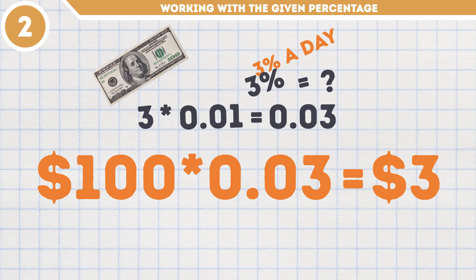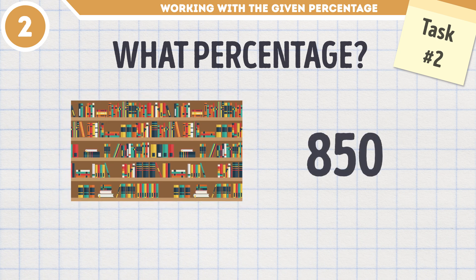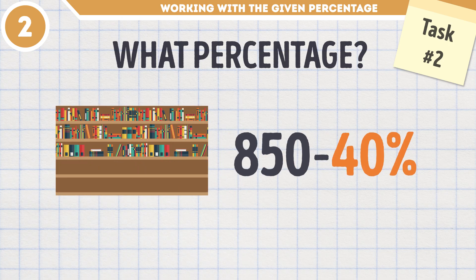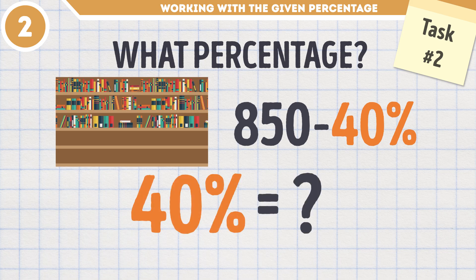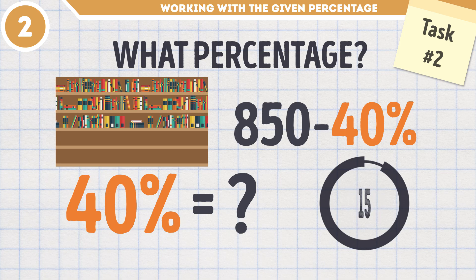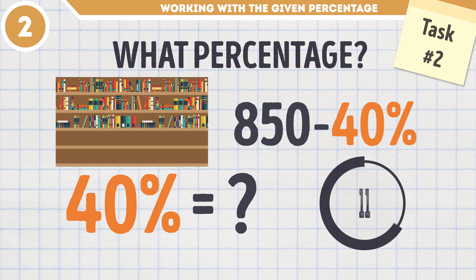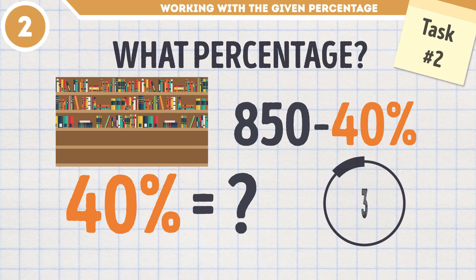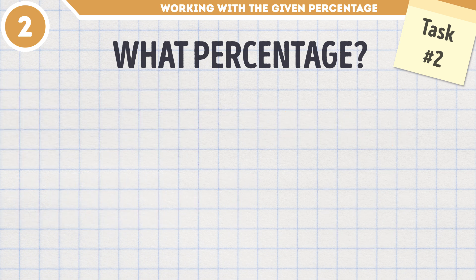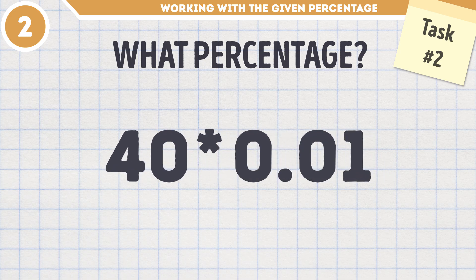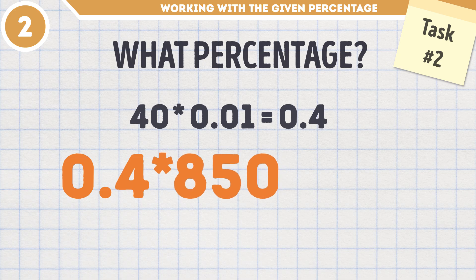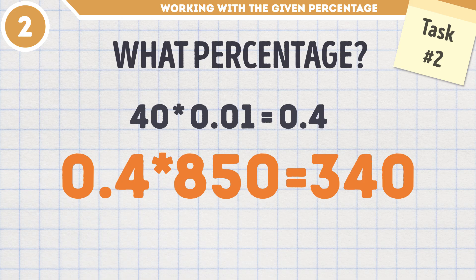Task number 2. There are 850 books in your local library. The library is going out of business and has decided to give 40% of their books to a nearby school. How many books will the school get? 15 seconds to find the correct answer. According to our formula, we first multiply 40 by 0.01, which is 0.4. Then take 0.4 and multiply it by 850. Your final answer should be 340. All this percentage stuff is a walk in the park.